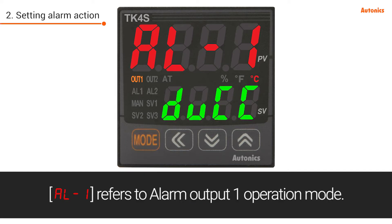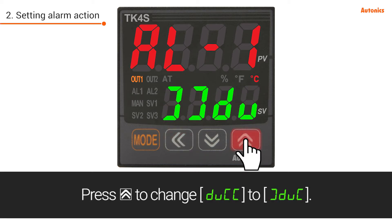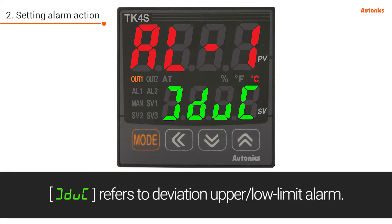AL-1 refers to alarm output 1 operation mode. Press Up to change from deviation upper limit alarm to deviation upper/lower limit alarm. This parameter now refers to deviation upper/lower limit alarm.